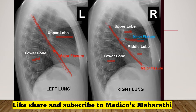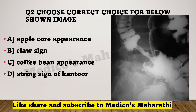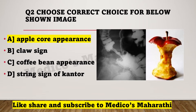Please keep watching this video till the end as we are revising previous year questions of FMG 2017-18. Next question: choose a correct choice for the below shown image. There are four options: apple core appearance, glass sign, coffee bean appearance, and string sign of contour. The correct choice for this question will be apple core appearance — this appearance seen in the image is apple core appearance.